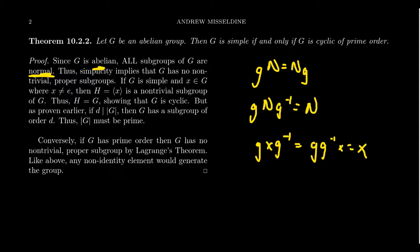In particular, left and right cosets are the same in every abelian group, so every subgroup of an abelian group is normal. Therefore, the only way an abelian group could be simple is if it has no proper non-trivial subgroups — that is, the only subgroups are the group itself and the trivial subgroup. So if G is simple and X is some non-identity element in G, take the cyclic subgroup generated by X — that's a non-trivial group. If G is simple, that forces it to be the whole group.